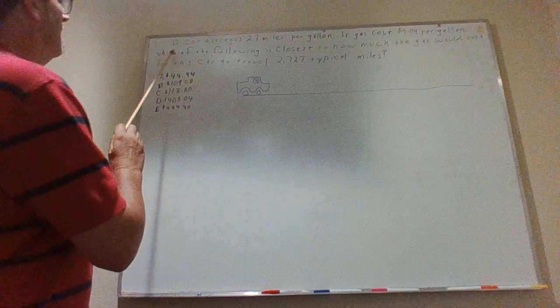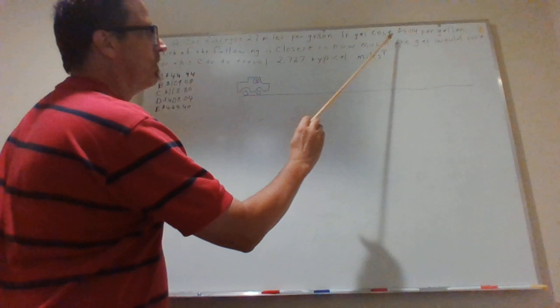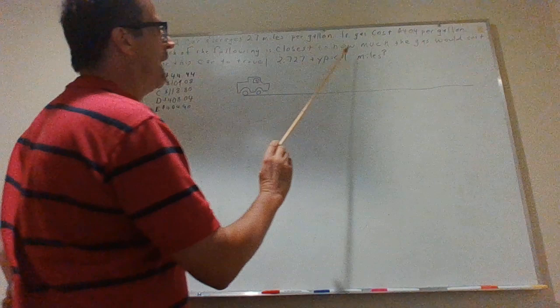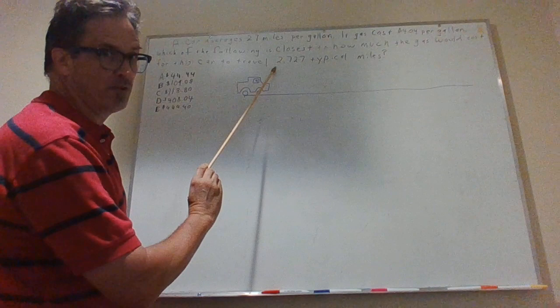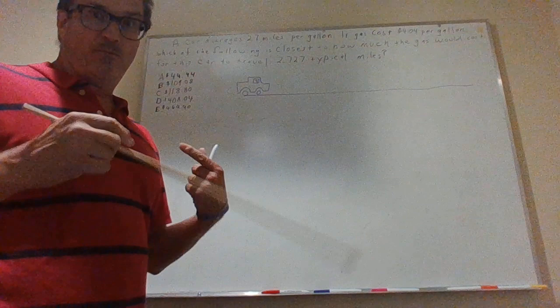Typical problem from an ACT test. A car averages 27 miles per gallon. If the gas costs $4.04 per gallon, which of the following is closest to how much the gas would cost for this car to travel 2,727 typical miles.